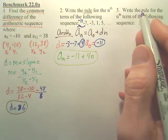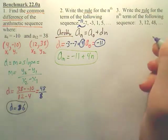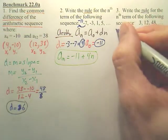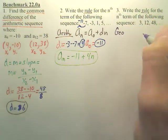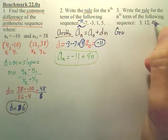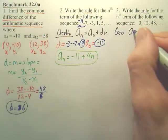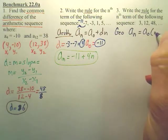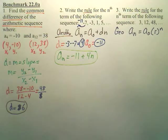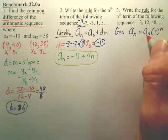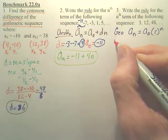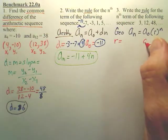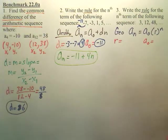Last one, number 3. I want the rule, and you first need to realize this one's actually a geometric. The reason I know that is we're multiplying each time by something. The rule for a geometric sequence is A0, R to the nth. So in order to do this, I need A0 and R. But you first need the common ratio, then you get the A0.